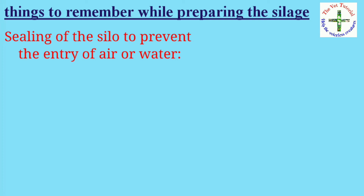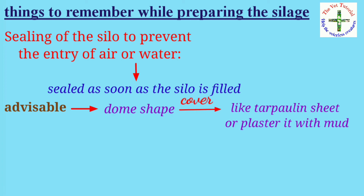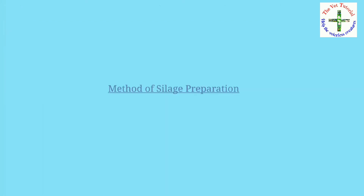Sealing of the silo: to prevent entry of water or air and to sustain anaerobic conditions, the silo should be sealed as soon as it is filled. It is advisable to fill the silo pit to form a dome shape and cover it with an insulator like a tarpaulin sheet or mud plaster. The dome shape will facilitate rainwater runoff and prevent seepage.